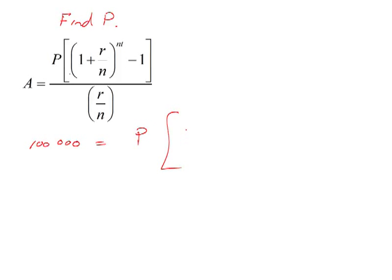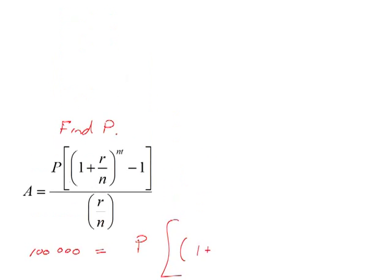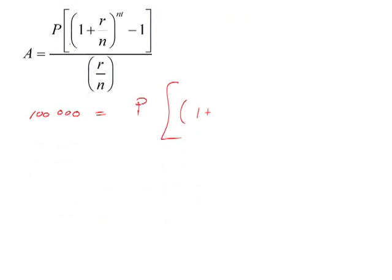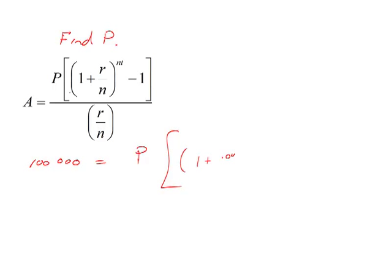Equals P times this quantity, 1 plus r, and up above we said r is 4.5%, so .045 over n. So we're doing this monthly, so n is 12. And now this term here, n times t, is the number of compounding periods, n times the number of years. So this whole expression, 1 plus .045 over 12, raised to the 12 times 20 minus 1, all divided by r over n, so .045 over 12.